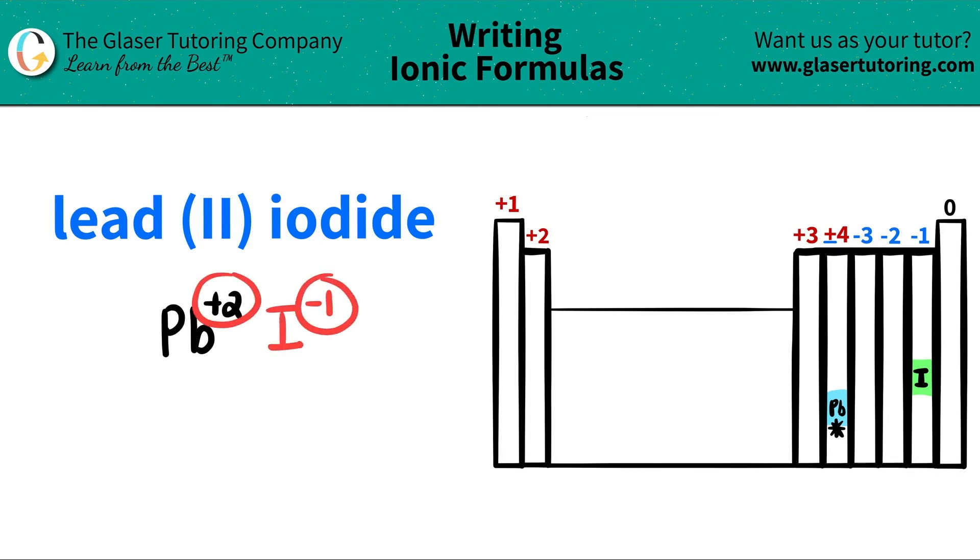Now we have both oxidation states and the elements. So all we're going to do is we're going to take those charges and crisscross them, and that will tell us how many of each we need. So this plus two crisscrosses down, telling me that I need two iodines, and this negative one crisscrosses down, telling me that I need one lead. One Pb.